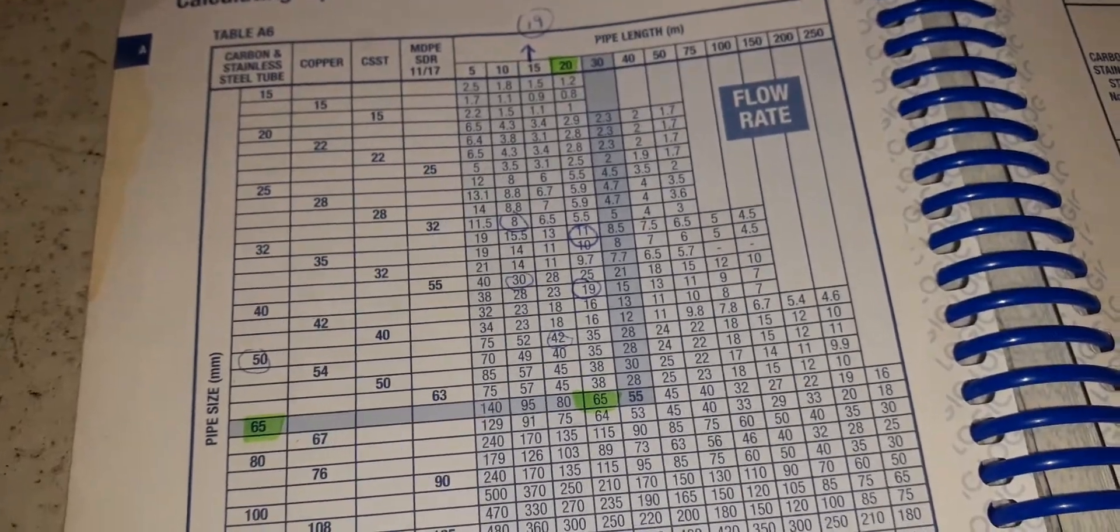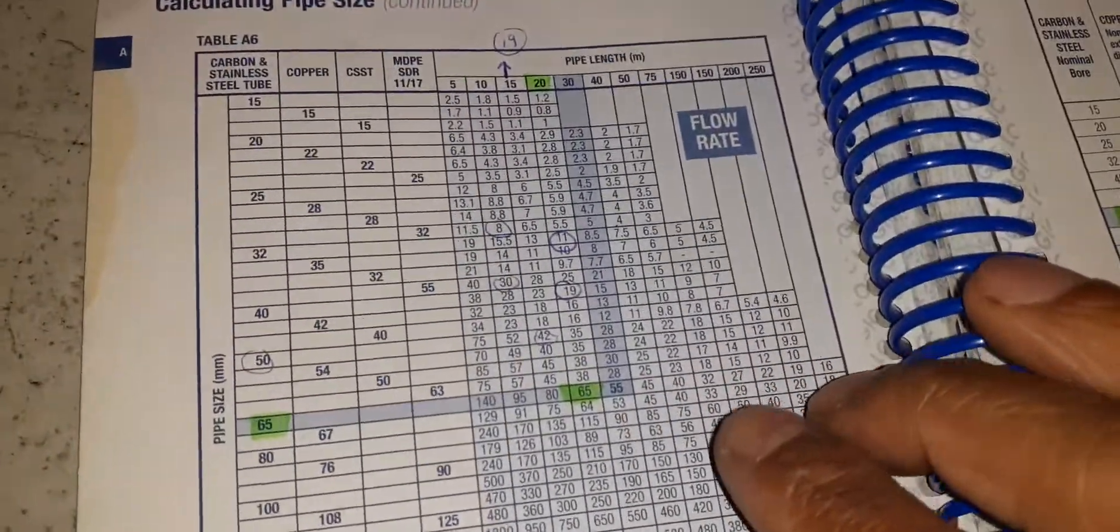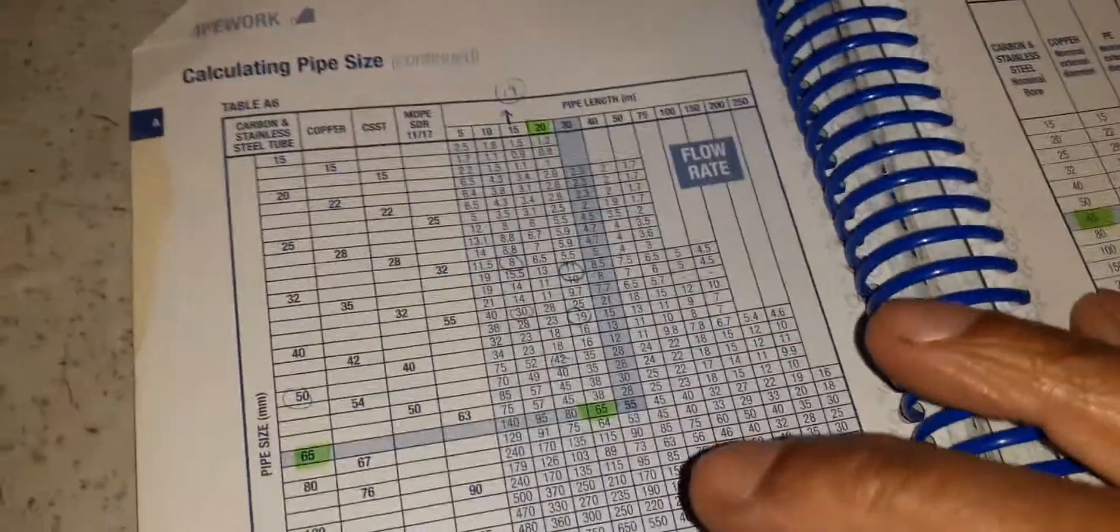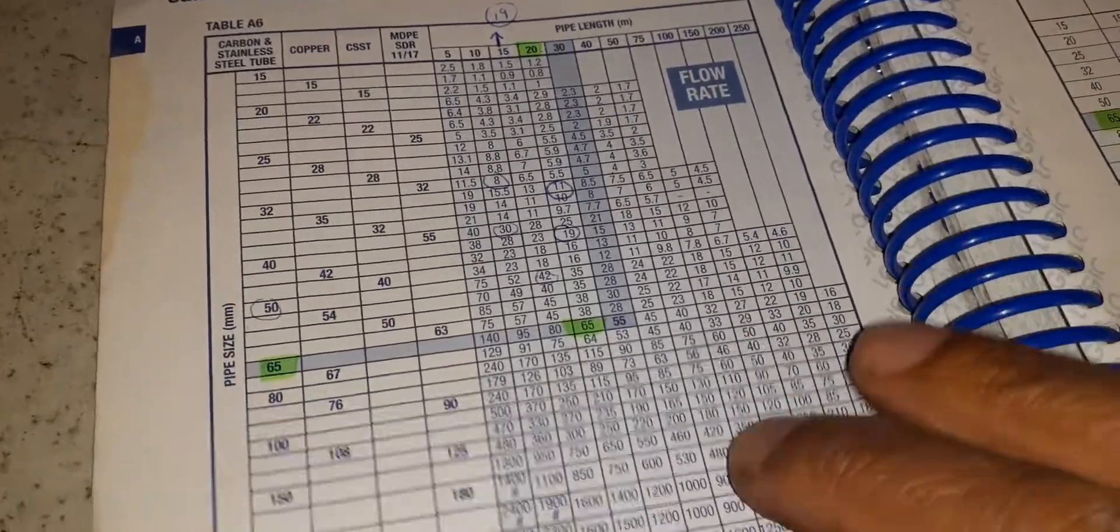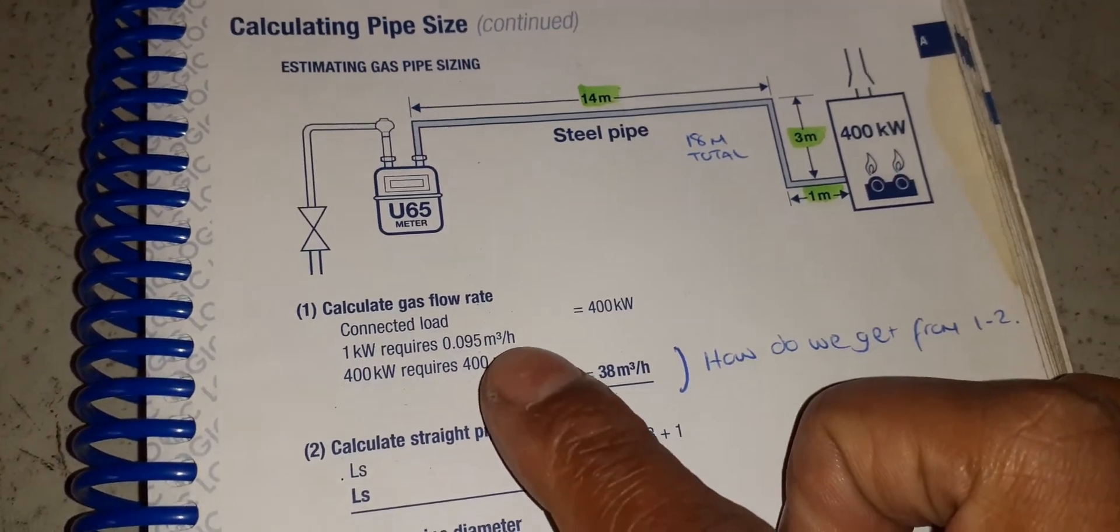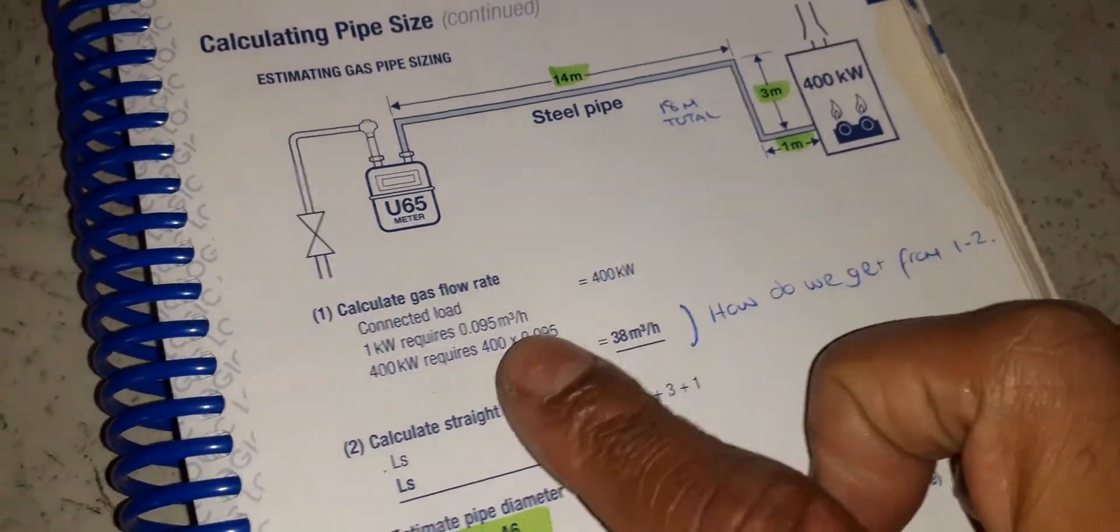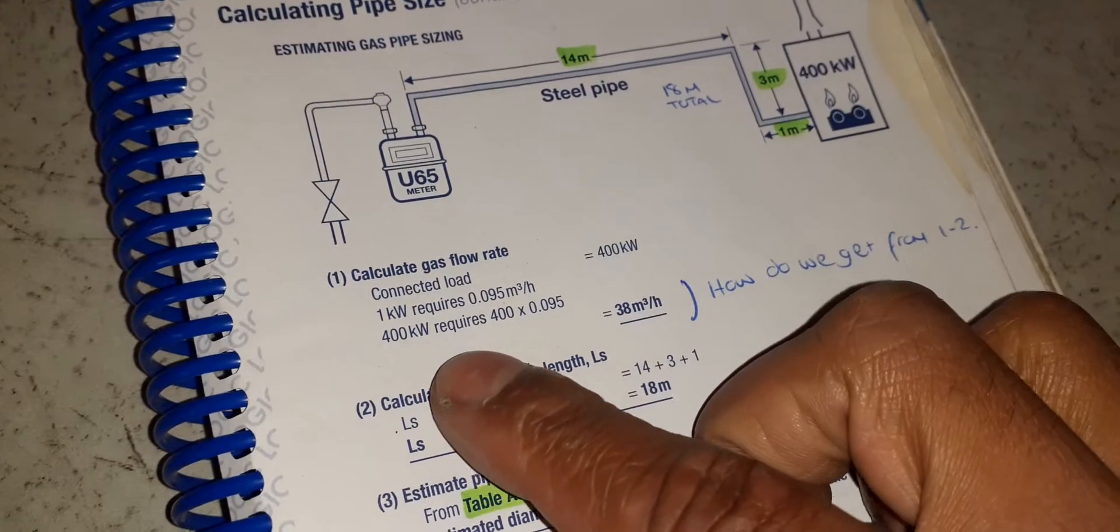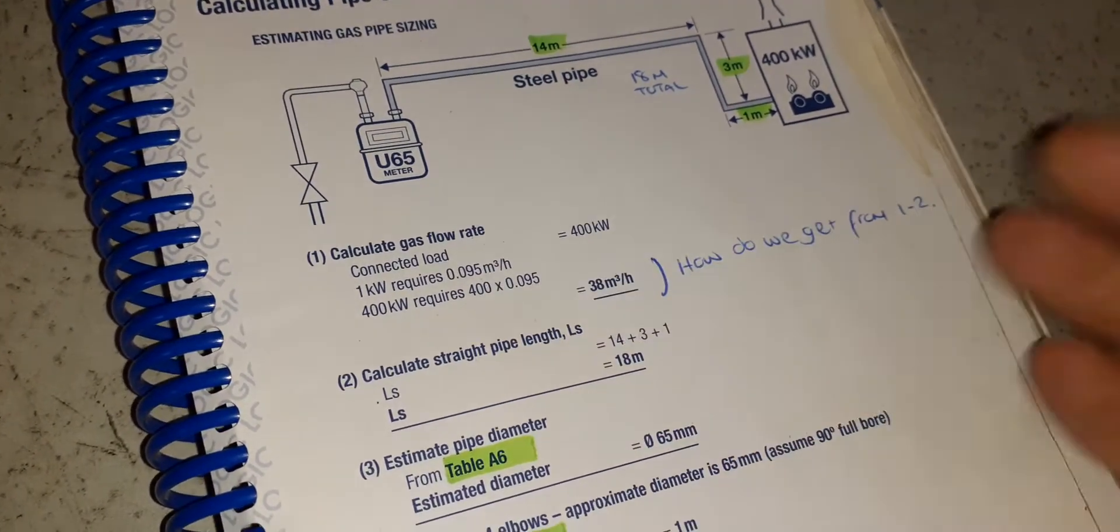Right, I have such and such. You do your calculation whether it's a 200 kilowatt, 300 kilowatt boiler, and then you times it by the recommended amount for each kilowatt, which is 0.095 meters cubed an hour for every kilowatt.